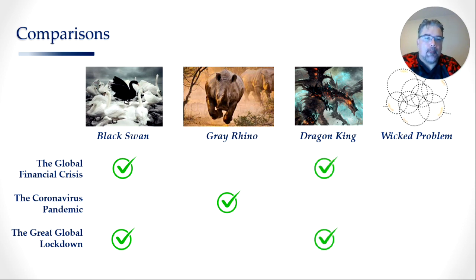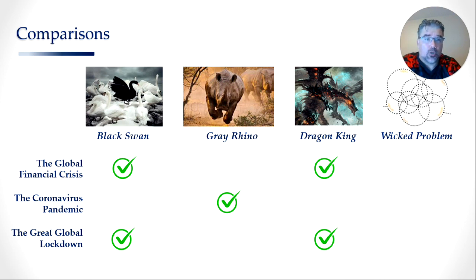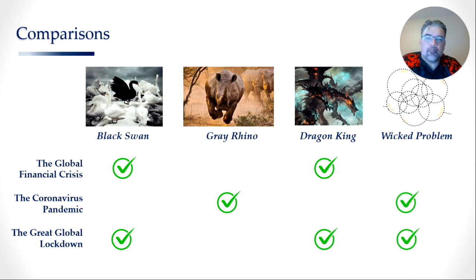The GFC was definitely a dragon king — more mortgage bond losses and net losses were caused in that single event than in numerous market crashes leading up to it. The great global lockdown, although not a dragon king right now, seriously has the potential to become one. Major institutions like UNICEF and the World Economic Forum are warning about long-term effects that could be generational — negatively impacting our children's ability to get employed, raise debt, and their education levels. So the great global lockdown has significant potential to become a generational dragon king. As for wicked problems — the coronavirus, all viruses, and the great global lockdown are definitely wicked: continually morphing new strains, new problems, and new areas of concern, highly complex and highly adaptive.